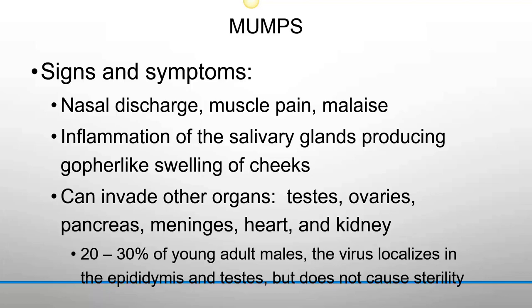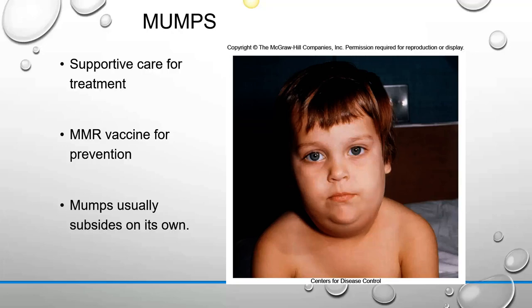In 20 to 30% of young adult males, the virus localizes in the epididymis and testes but does not cause sterility. You give supportive care; mumps usually subsides on its own. Mumps is a quarantinable disease, so if somebody presents with mumps they get quarantined and questions are asked about contacts. With the rise of the anti-vaccine movement, there will likely be more cases of mumps in the United States.